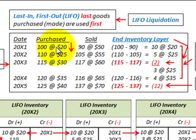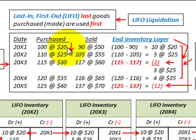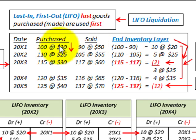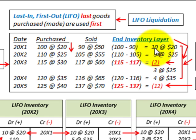To go through our problem, we're going to have purchases that we make each year, and the price is going to increase each year on our purchased items. We're going to be looking at five years here. For year one — 20X1 — we're going to make a purchase of 100 units at $20. We're going to sell 90. So our ending inventory for 20X1 would be the 100 purchases less the 90 in sales, giving us 10 remaining in ending inventory at $20 each.